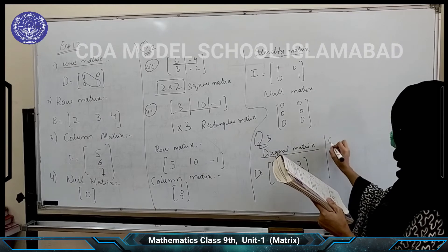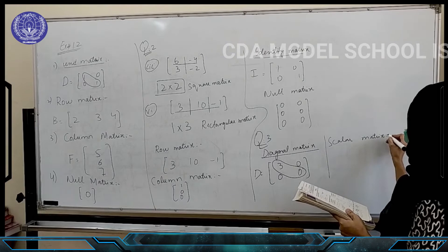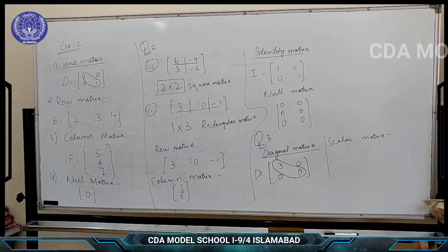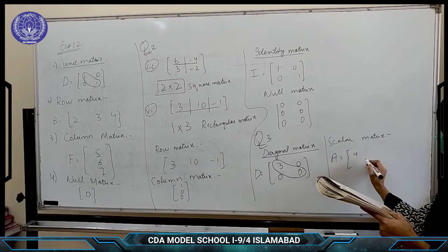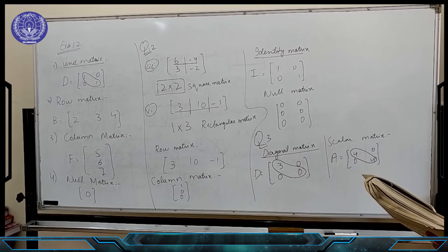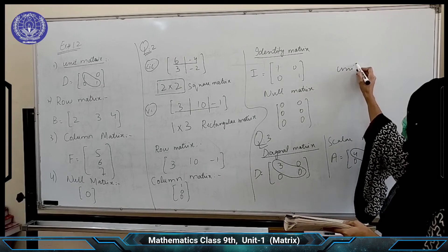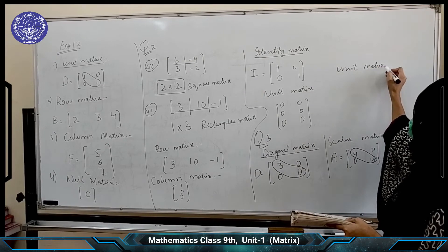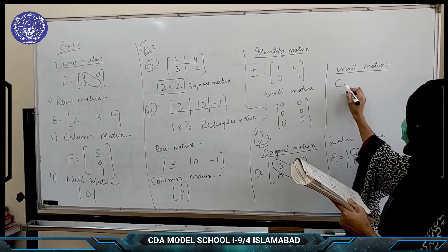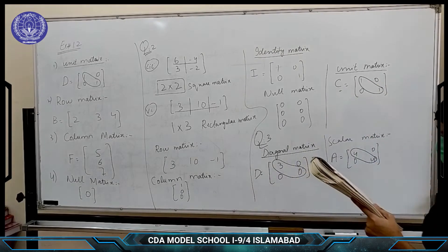Now scalar matrix. Scalar matrices are those matrices whose diagonal entries are all the same number. In matrix A the diagonal entries are the same number, so this is a scalar matrix. And in a unit matrix, the diagonal entries are only 1, like 1, 1 with 0s elsewhere — the diagonal consists only of 1s.